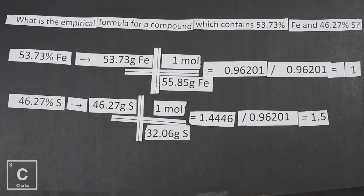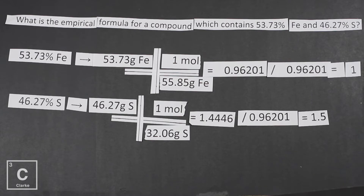We don't always need to multiply till whole, because the point is we want whole numbers. But 1.5 is not a whole number. The only time you can round is if you get something like 0.01 or 0.9-something — you can round that to a whole number. But if you have 0.2, 0.3, 0.4, 0.5, 0.6, 0.7, 0.8 — no, you cannot round that to a whole number. You've got to multiply till whole.